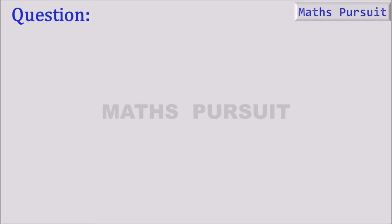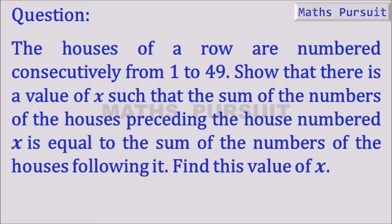The question states that the houses of a row are numbered consecutively from 1 to 49. Show that there is a value of x such that the sum of the numbers of the houses preceding house number x is equal to the sum of the numbers of the houses following it. Find this value of x.